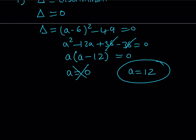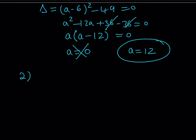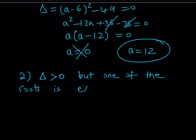Here is the second case. In this scenario, our quadratic equation has two solutions, but one of them is not going to work. Sometimes when you're solving rational equations, logarithmic equations, or trigonometric equations — especially when you square both sides — some solutions are introduced that are not actual solutions. They're called extraneous solutions. So we want delta, the discriminant, to be positive so that we can get two solutions, but one of the roots is extraneous — meaning it satisfies the manipulated equation but doesn't work in the original one.